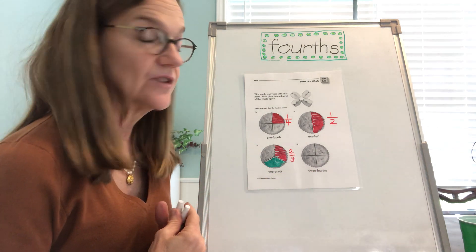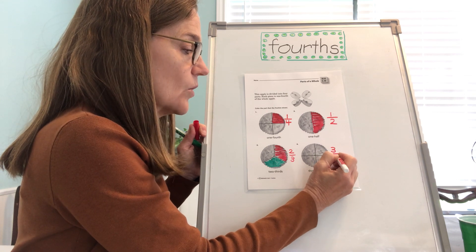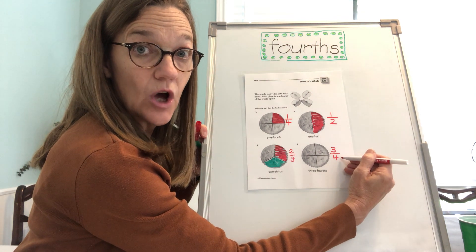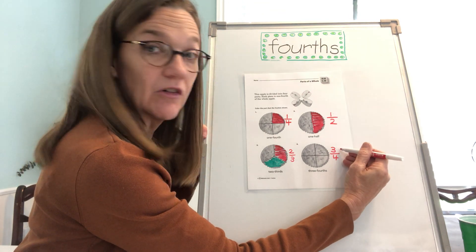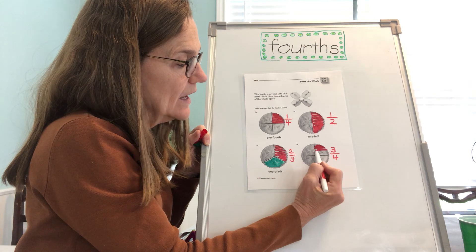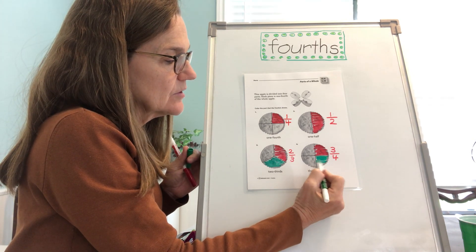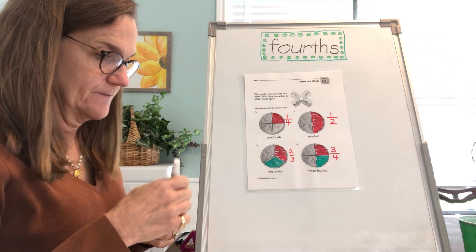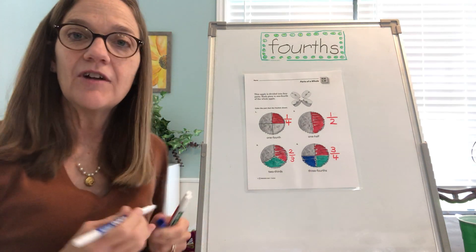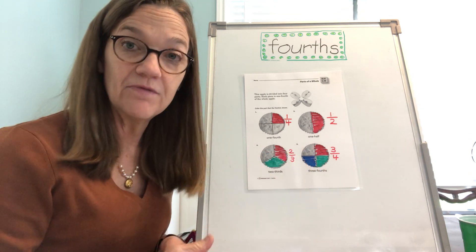Last, they want us to color three-fourths. Three is the number of equal parts they want us to color, and four is the total number of equal parts in the pie. They want us to color three of the four. So here we go — this is one-fourth, this would be two-fourths, and this would be three-fourths. We've colored three of the four equal pieces — one, two, three of the one, two, three, four equal pieces.